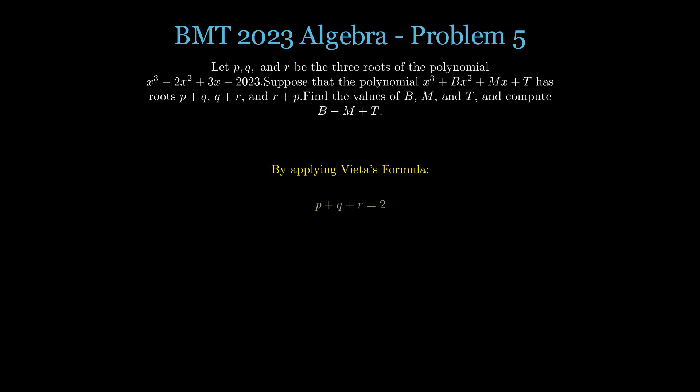First, the sum of the roots, p plus q plus r, is equal to 2. Second, the sum of the products of the roots taken two at a time, pq plus qr plus rp, is equal to 3. Finally, the product of the roots, pqr, is equal to 2023.